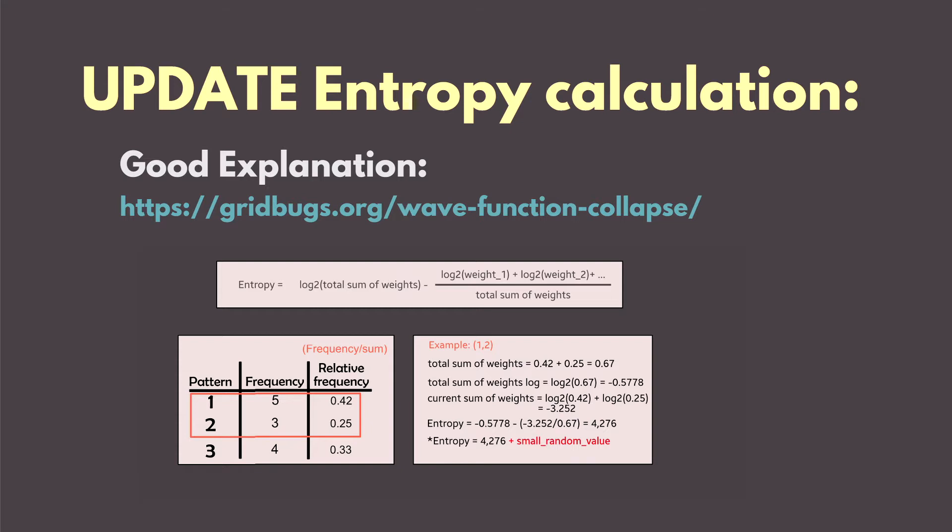So I'm posting this as the next video to explain what I have done wrong and how it's supposed to be. In the previous video, I took the total sum of weights as all the relative frequencies.